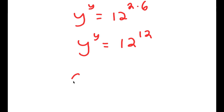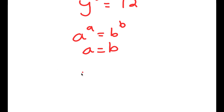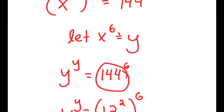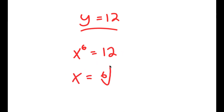If I have something in the form a to the power of a equals b to the power of b, then a equals b. So since y to the power of y equals 12 to the power of 12, y equals 12. And since we let x to the power of 6 equal y, we have x to the power of 6 equals 12, meaning x equals the 6th root of 12.